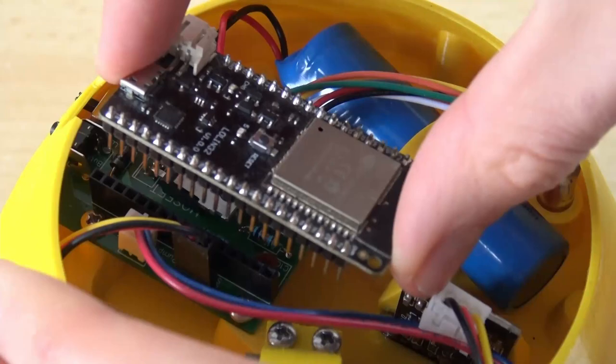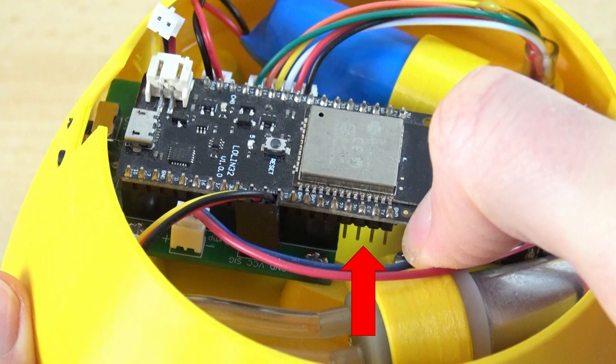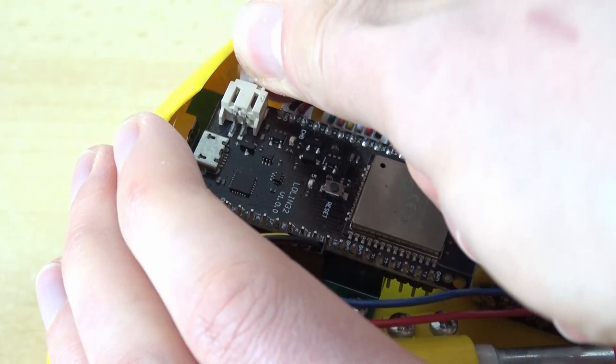After that, you can plug in the ESP32 into the board. Notice that four pins on each side don't get connected. Then plug in the battery cable from the circuit board to the ESP32.